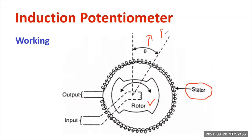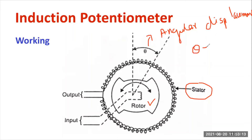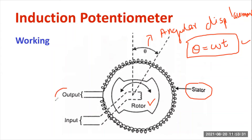The rotor part is directly connected to the mechanical body. Theta represents the angular displacement, where theta equals omega times t — omega is the angular frequency and t is the time. Our ultimate goal is to measure the angular displacement of the shaft. The output voltage is collected across the stator winding, and we provide approximately 0 to 60 volt AC to the rotor.